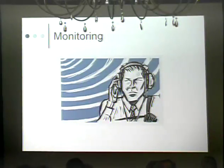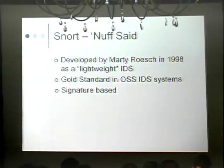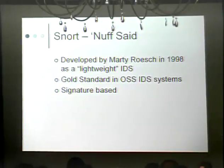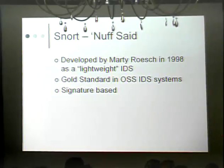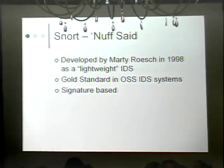Now you have all these honeypots set up and you want to monitor them. Snort — enough said. Everyone uses it for an IDS. Technically you can use any IDS, but for the rest of us, Snort was developed by Marty Roesch back in 1998 as a lightweight IDS — though Lord knows it isn't that now. It's more or less the gold standard in open source IDS systems. One major complaint is that it's signature-based — a lot like antivirus updates. If you're not keeping those signatures up to date, you're not going to catch anything.